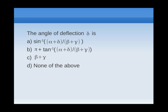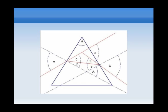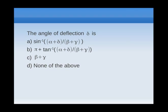Moving on to option B. Well, tan inverse of (α+δ)/(β+γ) is a valid number. But this is π plus tan inverse of (α+δ)/(β+γ). And this whole number is actually more than 180 degrees. But if you refer back to the original diagram, we can see that the angle of deflection delta is actually less than 180 degrees. So that removes option B also.